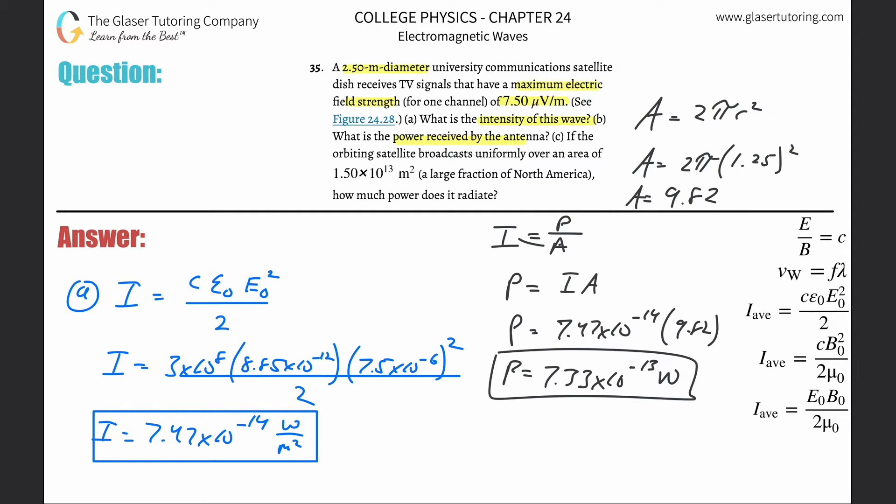And then letter c. Now it's saying if the orbiting satellite broadcasts uniformly over an area of this, how much power does it radiate? So again, we need to basically do the same calculation. The intensity is what is staying constant, but the power distributed now over this larger area is changing.